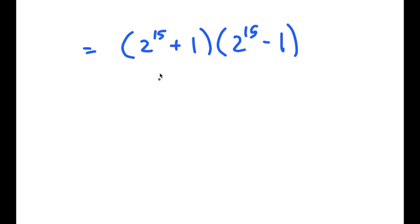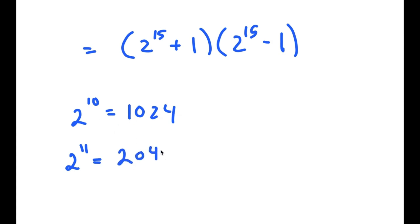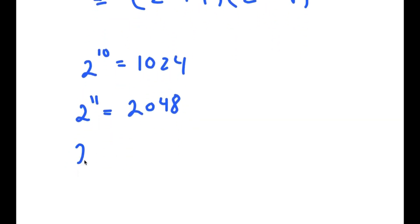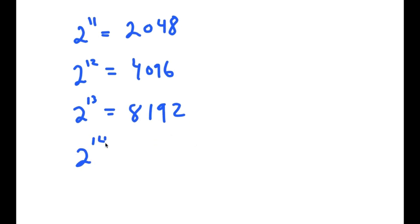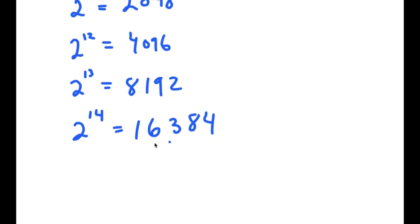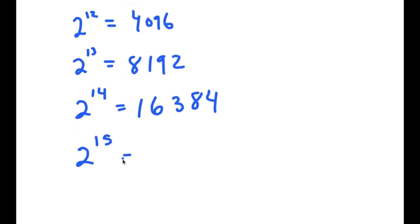Now, 2 to the power of 15 — what's the value of that? Well, 2 to the power of 10 is 1024. So 2 to the power of 11 is double of 1024, which is 2048. 2 to the power of 12 is double of 2048, which is 4096. 2 to the power of 13 is double of 4096, which is 8192. 2 to the power of 14 is double of that, which is 16,384. And finally, 2 to the power of 15 is double of that, which is 32,768.